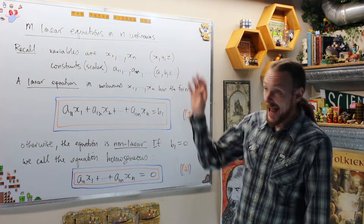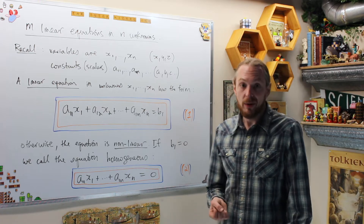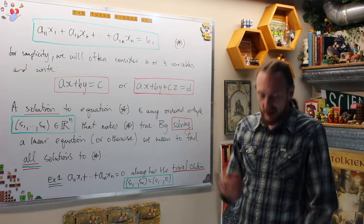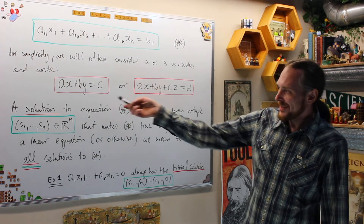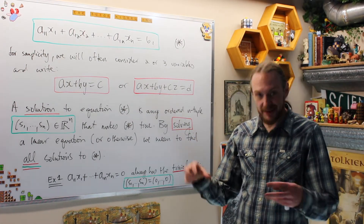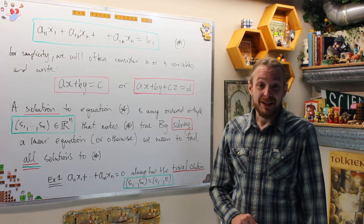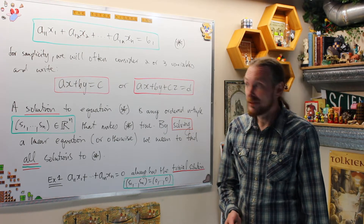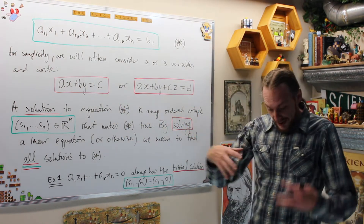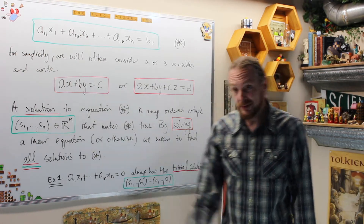Let's look at M equations which are all linear — a system of M equations in N unknowns. For simplicity, we'll often deal with two unknowns or three unknowns, as it's easier pedagogically. The scenario never changes: one solution, no solution, or infinitely many solutions.